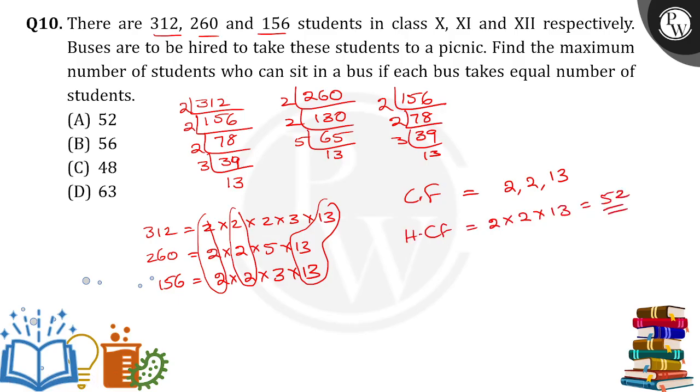So which means in each bus, the maximum number of students is equal to 52 students. We can take it in one single bus. So option A is the right answer. Thank you.